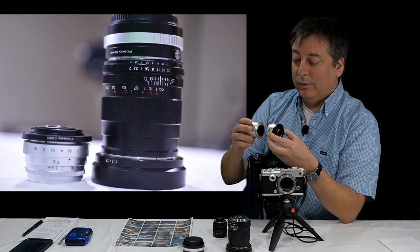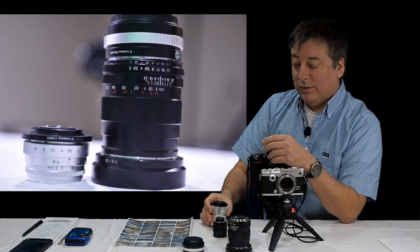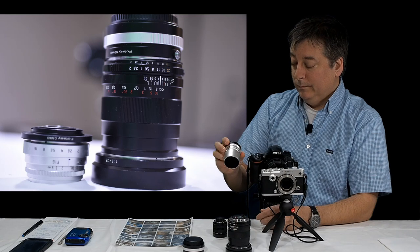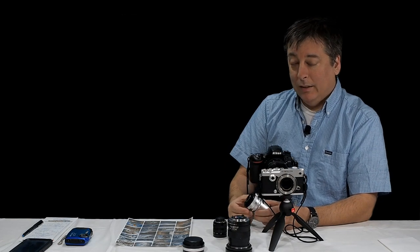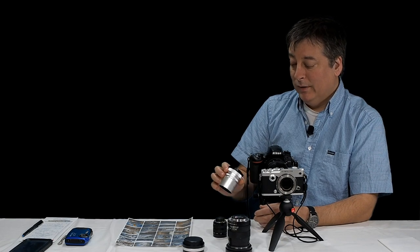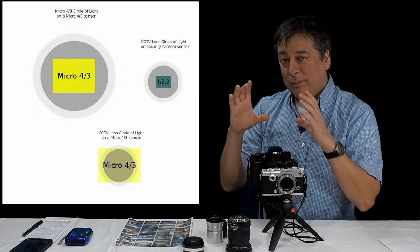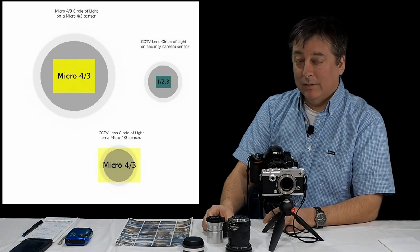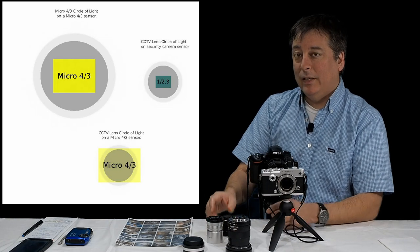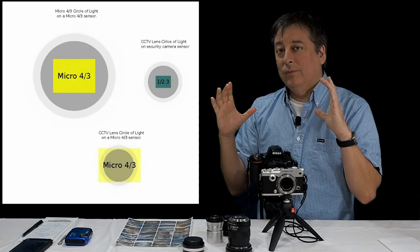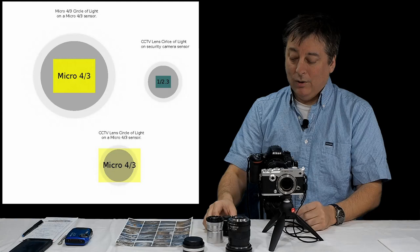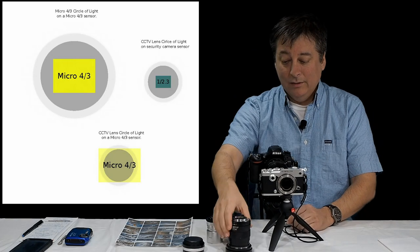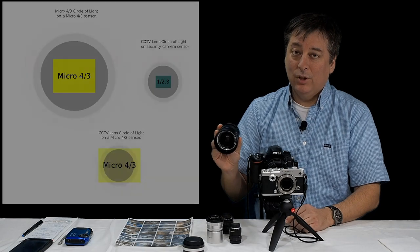The reason these lenses are so small is because they were designed for an even smaller sensor than Micro Four Thirds. That's why you can get a really fast small prime. That's also the reason you get that swirly bokeh effect - the circle of light that comes out of these is a little bit smaller than a standard Micro Four Thirds lens. As you go outside that circle of light, you start seeing defects - chromatic aberrations - and that's what causes the swirly bokeh effect.